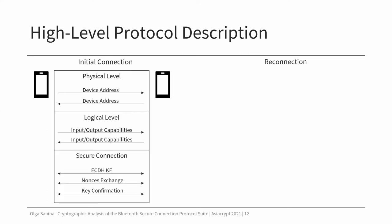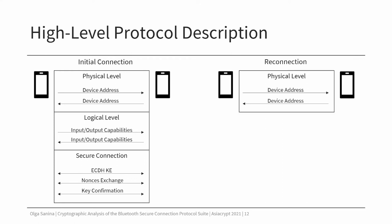Finally, they can start the pairing process, where they first perform the Elliptic-curve Diffie-Hellman key exchange to send each other the Diffie-Hellman shares, then they exchange some random nonces, and then they set a key confirmation to check the derived shared key. For the reconnection step, the devices again need to connect on the physical level if they are not connected yet. Then they can go directly to the session key establishment and derive a session key from the shared secret established during the initial connection.